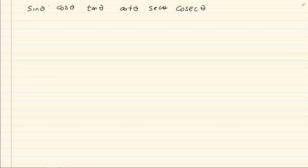The first thing we need to be familiar with is the general trig ratios. Our six trig ratios are sin, cos, tan — which you can get on your calculator — then cot, sec, and cosec. To remember what their ratios are, we use the mnemonic: oranges apples, oranges apples, hearts hearts.